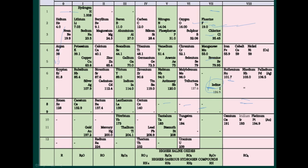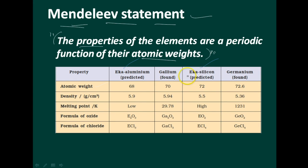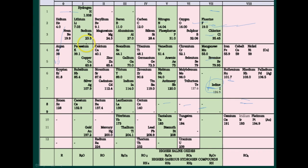Both gallium and germanium were unknown at the time when Mendeleev proposed his periodic table. He left a gap under aluminium and a gap under silicon and called these elements eka-aluminium and eka-silicon. These were not discovered at that time. The boldness of Mendeleev's quantitative predictions and their eventual success made him and his periodic table famous. Just have a glance at this Mendeleev's periodic table.